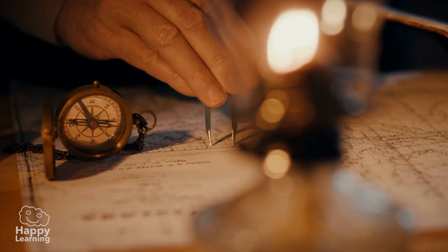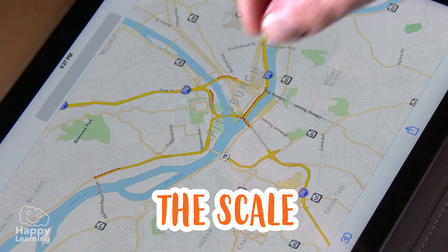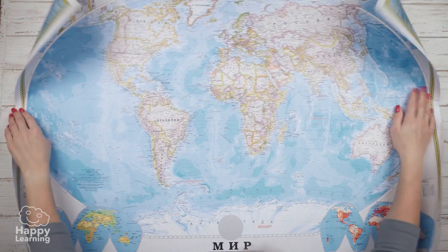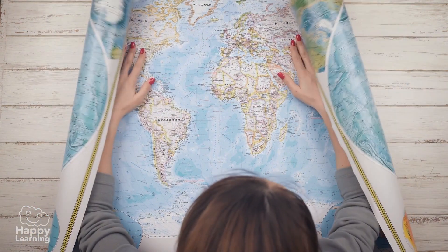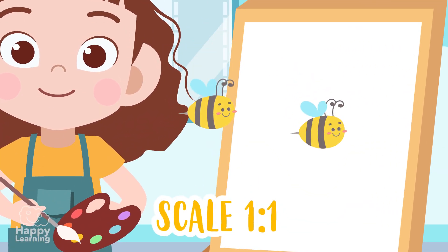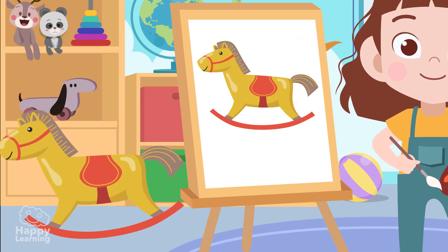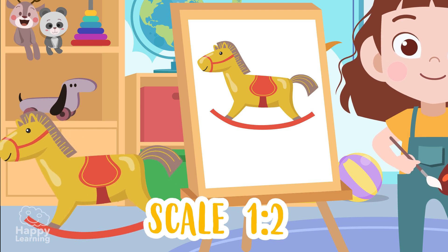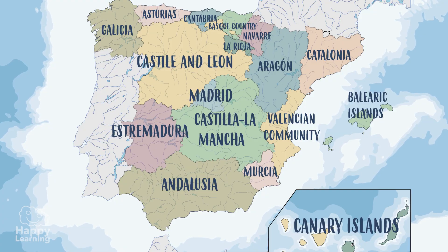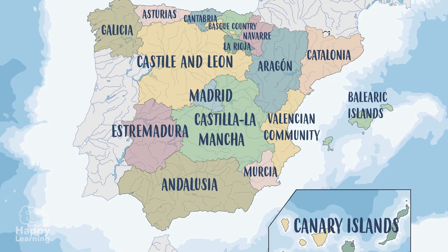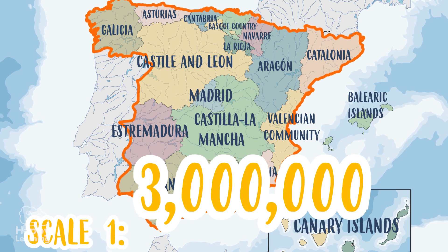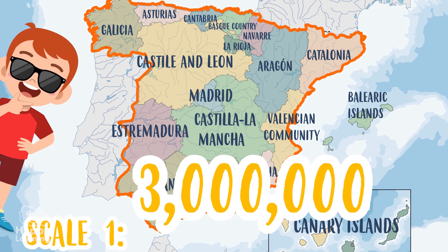Another important element in maps is the scale. The scale indicates how many times a place is reduced to fit in a drawing. Because of course, if we were to draw its real size, there wouldn't be enough paper in the world. For example, a one-to-one scale drawing would be the real size, while a one-to-two scale means that the object has been reduced by half. This map of Spain is at a scale of one to three million, which means we've had to reduce Spain three million times so that we can see it here. What a good invention this scale thing is!